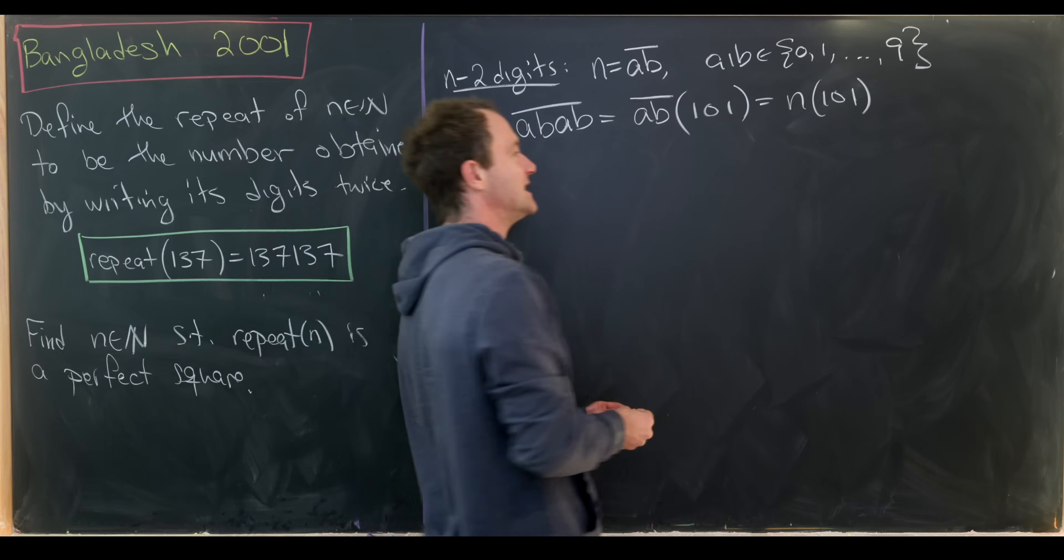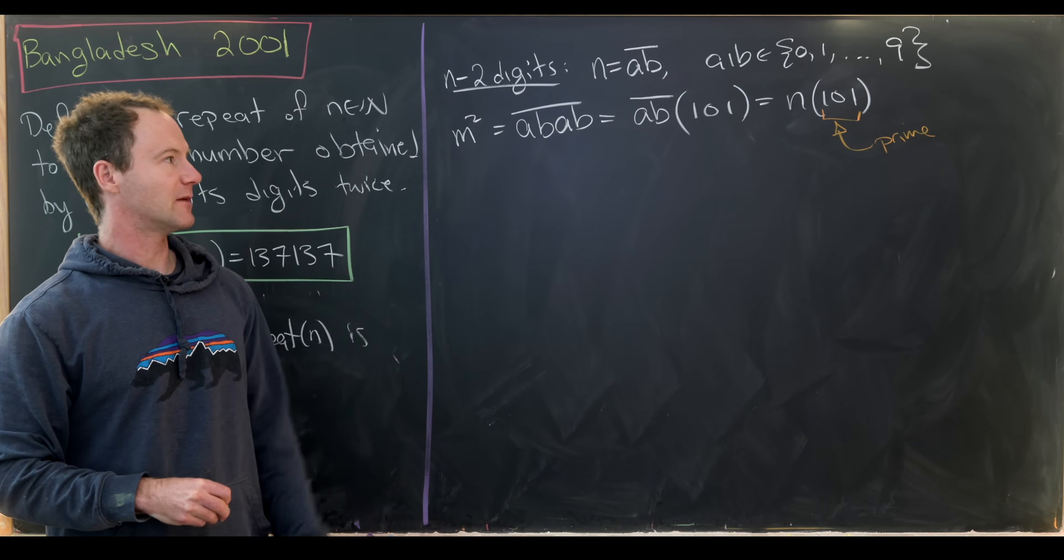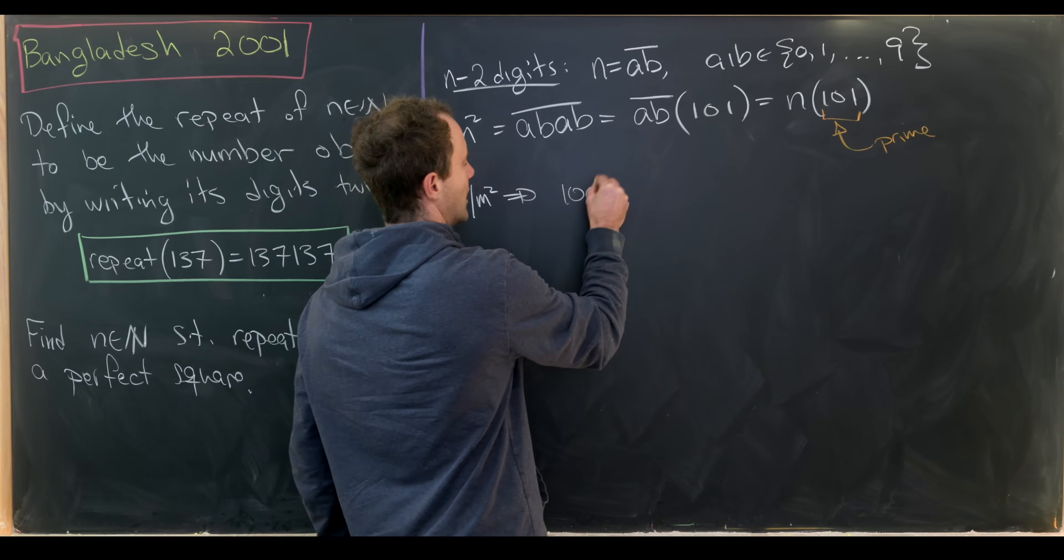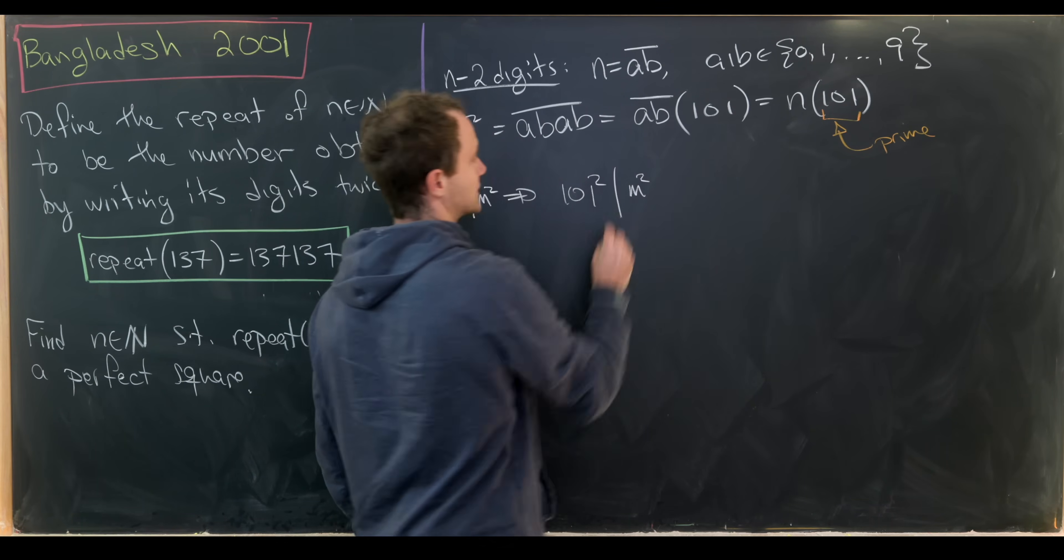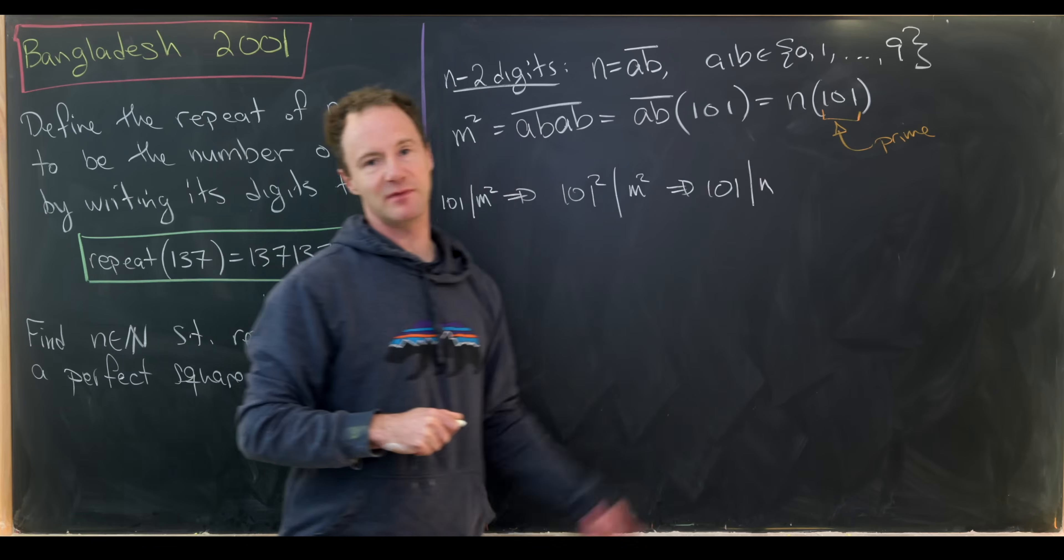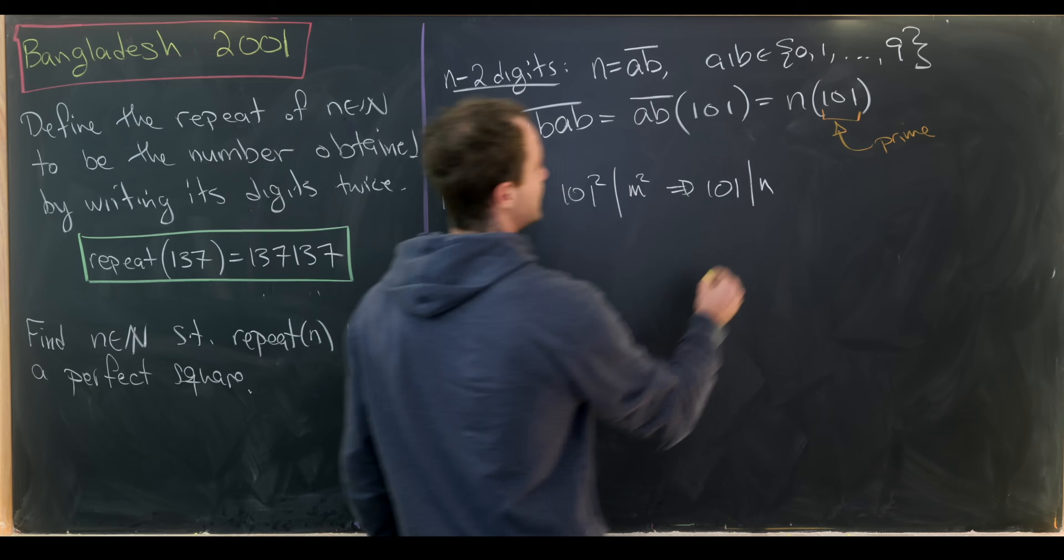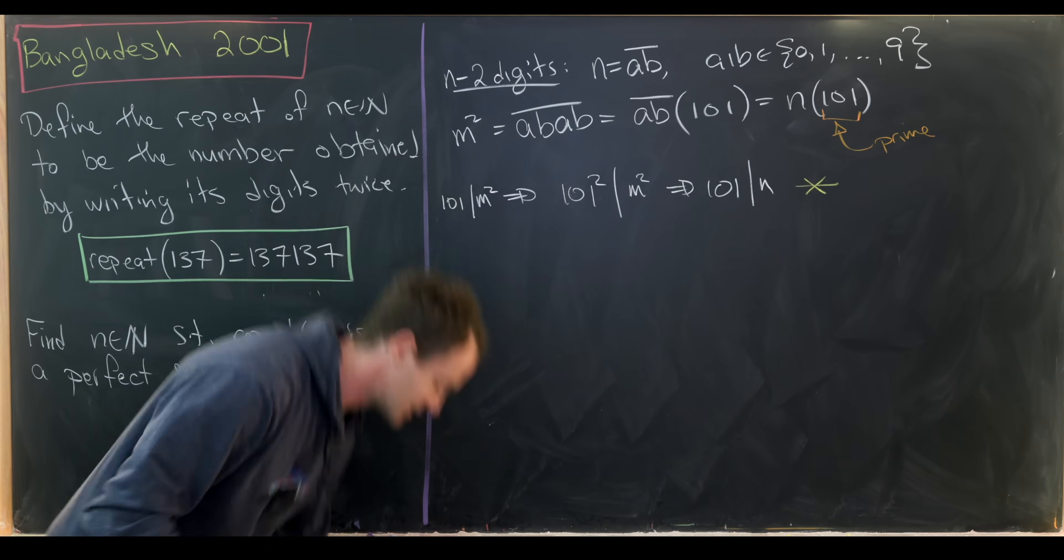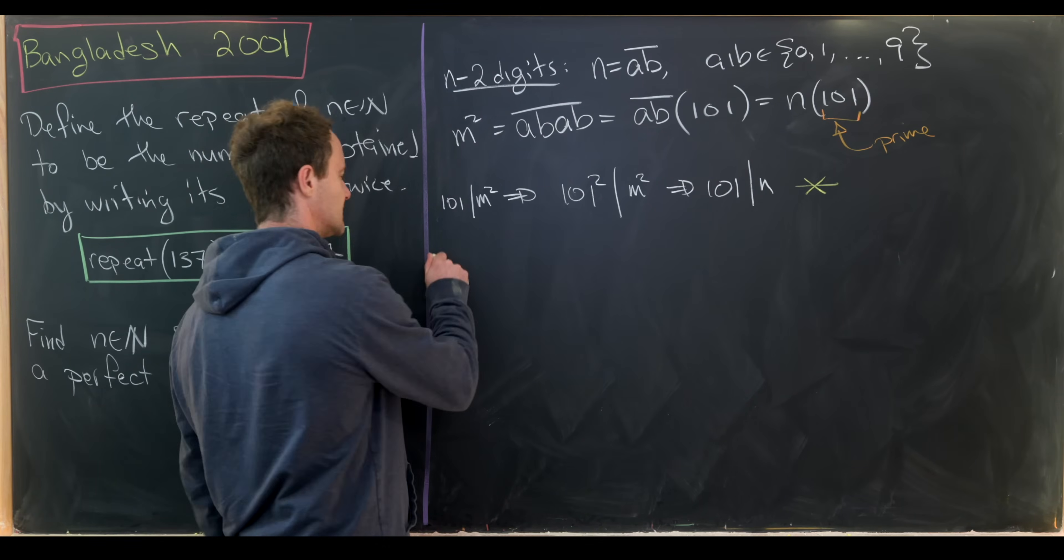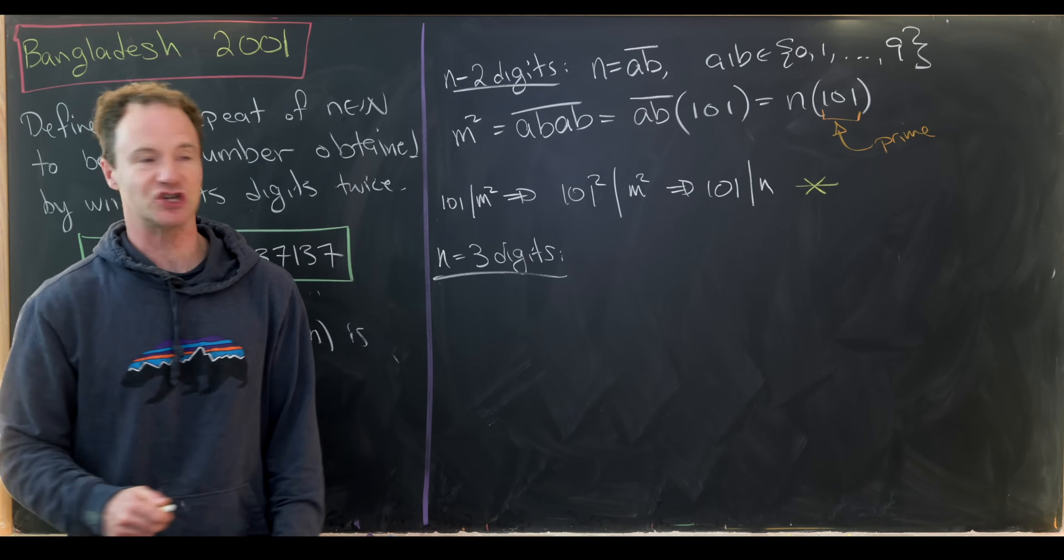But then what we can do is easily check that the number 101 is prime. But if the number 101 is prime, then we have 101 dividing into m squared tells us that 101 squared also divides into m squared. But that tells us that 101 divides n, just like maybe clearing 101 out of there. But this is a big contradiction. This is a big contradiction because we've said that n has two digits. But for 101 to divide n, then we would need n to have three digits.